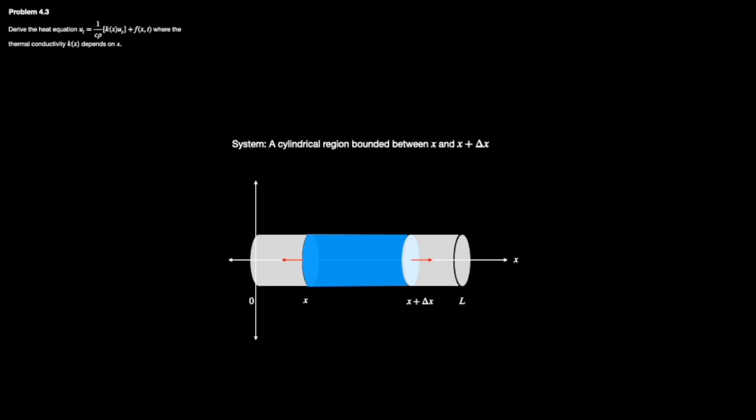The system itself remains unchanged. We're dealing with a cylindrical region bounded between x and x plus delta x, and we're only concerned with how the flux is flowing at the boundaries.